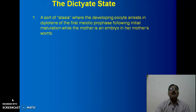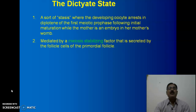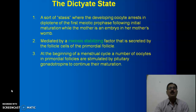The figure shows the dictyate stage. The dictyate stage is mediated by a meiosis-stabilizing factor of the follicle cells at the beginning of the menstrual cycle.